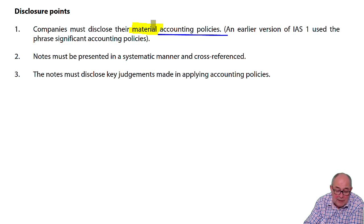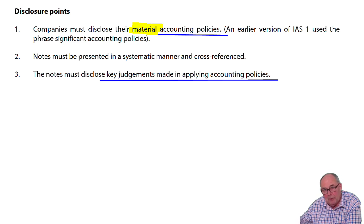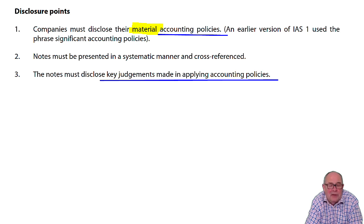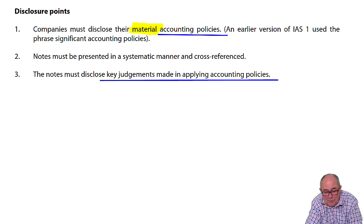And of course, if you look at point three — sometimes if you talk to people and say you're an accountant, they might say 'bean counter.' It's not true, is it? We're not bean counters. We are Michelangelo. We are Leonardo. We are the great creators of financial reporting. So judgment is core to everything that we do, and those key judgments must be disclosed in the notes to the financial statements.